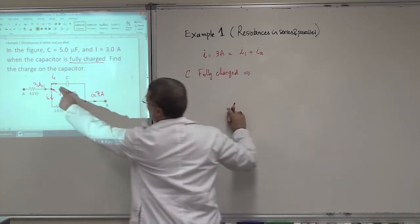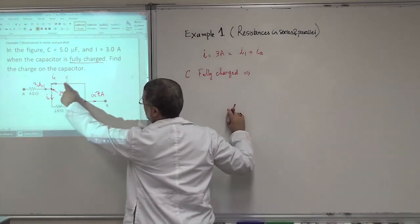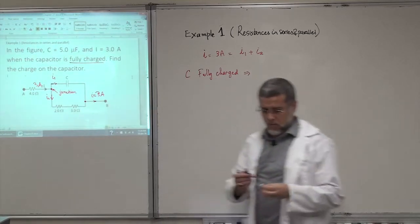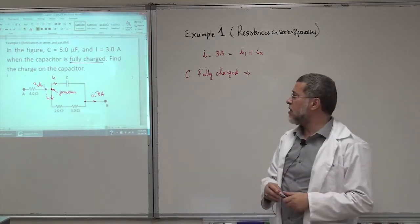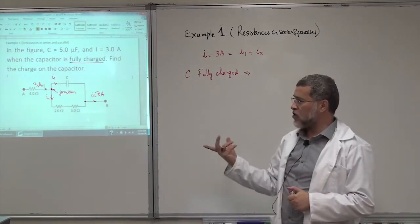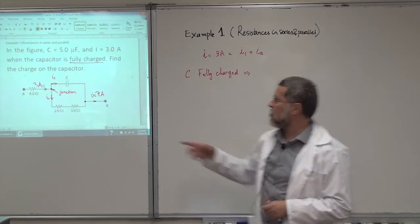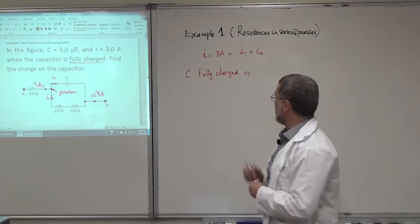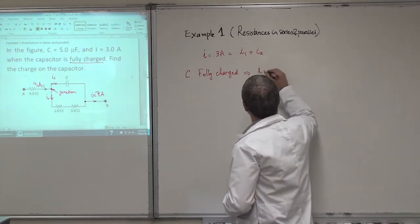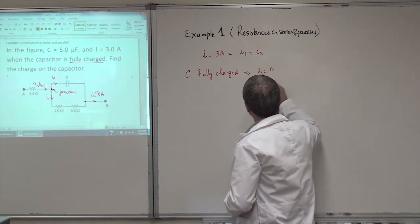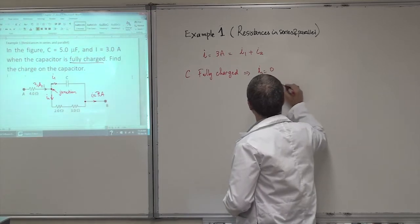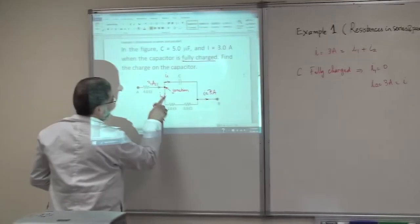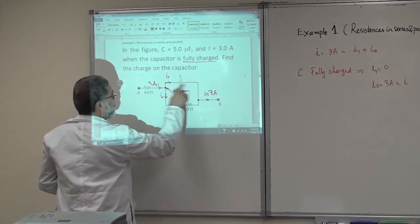When the capacitor is fully charged, there will be no current through it — the current was there to charge the capacitor. Since it is fully charged, the current I1 will be equal to zero. Then I2 will be three amperes, equal to I. All the current will go through that branch.